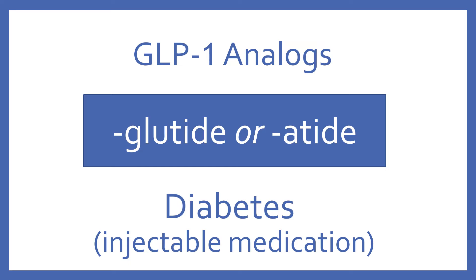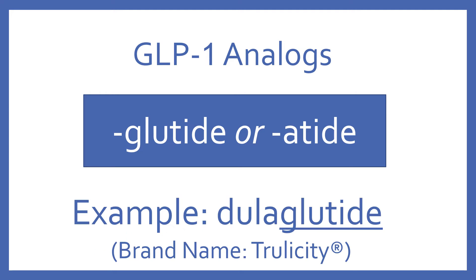GLP-1 analogs end in the suffix -glutide or -atide. GLP-1 analogs are an injectable medication for diabetes. An example of a GLP-1 analog is dulaglutide, and its brand name is Trulicity.